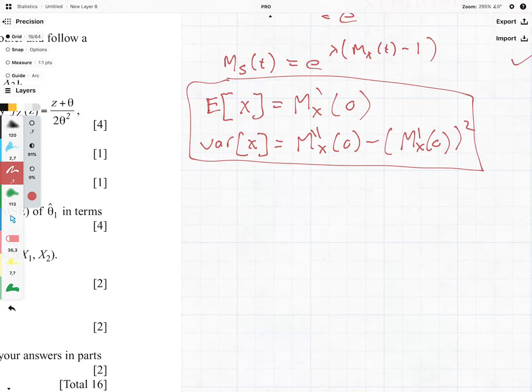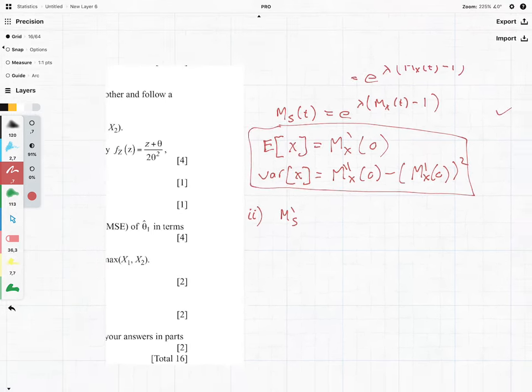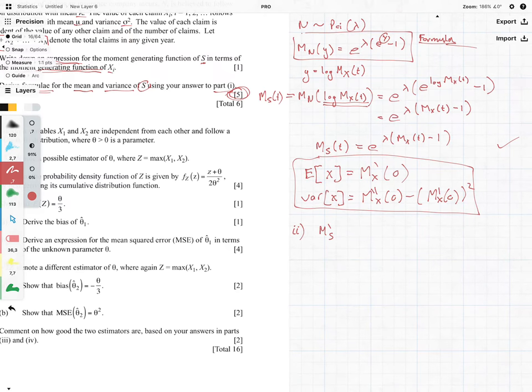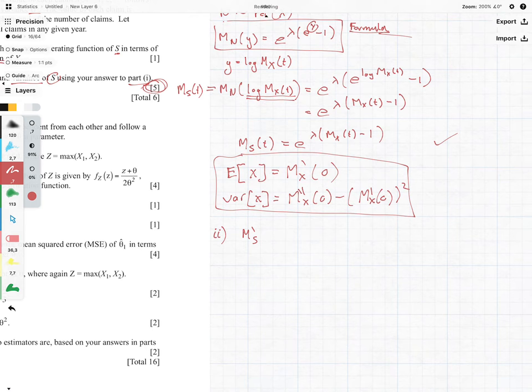So part two. What we need to do is take the derivative of our moment generating function for S, which is the total claims. So we have a moment generating function here of t. We're taking the derivative, and when we're taking a derivative with an exponential,